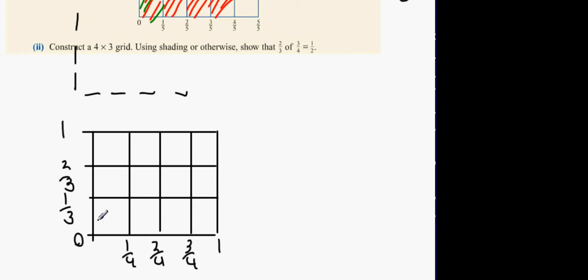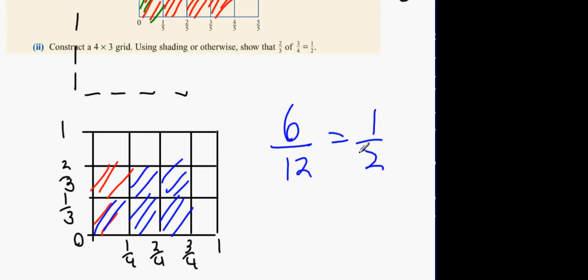We did what we did last time. Shade in 2 thirds, and then shade in 3 quarters. And what you're going to notice is that when we shade in everything that the two of them encompass, so this part and this part, we're going to have 6 out of, how many blocks in total? 12. 6 out of 12. 6 out of 12 is a half.